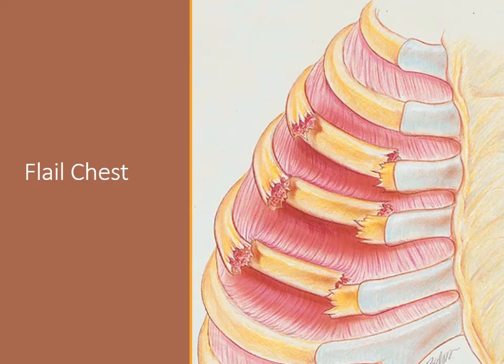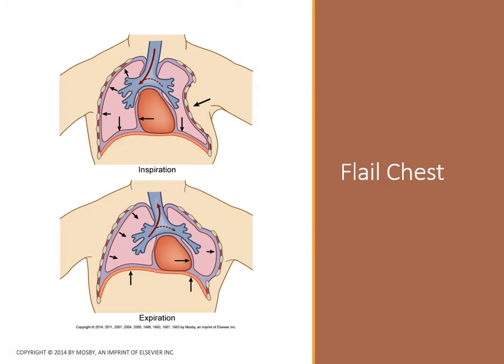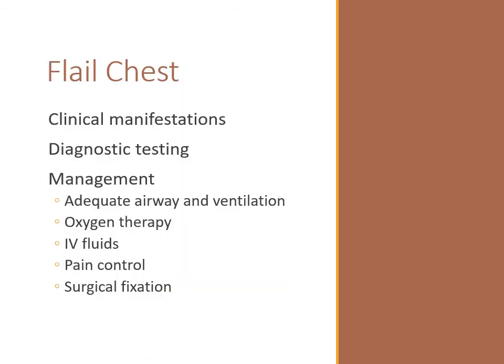Flail chest results from the fracture of several consecutive ribs in two or more separate places, causing an unstable segment. It can also be caused by fracture of the sternum and several consecutive ribs. The resulting instability of the chest wall causes paradoxical movement during breathing. The affected or flailed area will move in the opposite direction with respect to the intact portion of the chest. During inspiration, the affected portion is sucked in, and during expiration it bulges out. This paradoxical chest movement prevents adequate ventilation of the lung in the injured area and increases the work of breathing. The underlying lung may have a pulmonary contusion aggravating hypoxemia. In an unconscious patient, flail chest is usually apparent on visual examination, with rapid shallow respirations and tachycardia. In a conscious patient, flail chest may not be initially apparent due to splinting of the chest wall, and the movement of the thorax is asymmetric and uncoordinated.